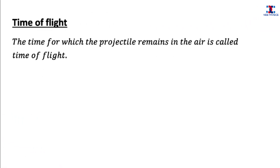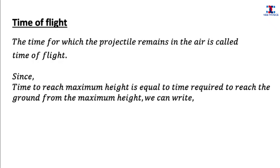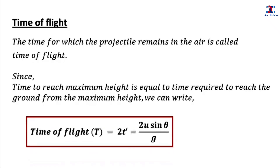Now let's derive the expression for time of flight. Time of flight is the time for which the projectile remains in the air before falling on the ground. It must be noted that the time taken by the projectile to reach the maximum height is equal to the time taken to return to the ground from the maximum height. So the time of flight must be double the time of ascent, giving: time of flight equals 2u sin theta divided by g.